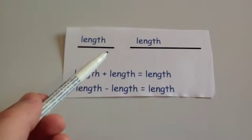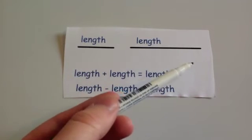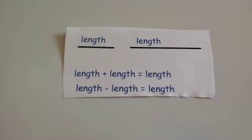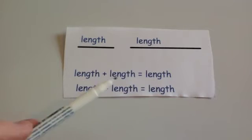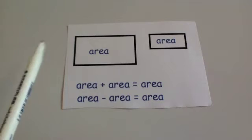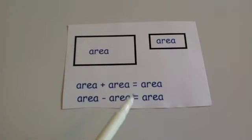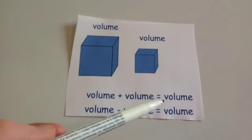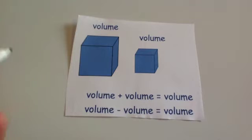If you have a length and you add another length to it, you just get a bigger length. For instance, if this was 4 cm and this was 7 cm, if you added them together you'd get 11 cm, which is still a length. Likewise, if you subtract a length from a length, you'd get a shorter length. So a length plus or minus a length is a length. Similarly, an area plus or minus an area is an area, and a volume plus or minus a volume is still a volume. If you add or subtract the same dimension, you just get the same dimension back.